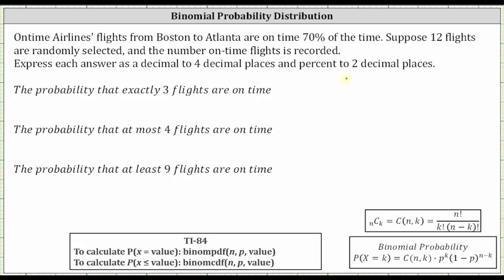The first thing to recognize here is that we do have a binomial probability distribution, where n, the number of trials, is 12 because 12 flights are randomly selected. And because the flights are on time 70% of the time, P, the probability of success, is equal to 70%, which as a decimal is equal to 0.7.